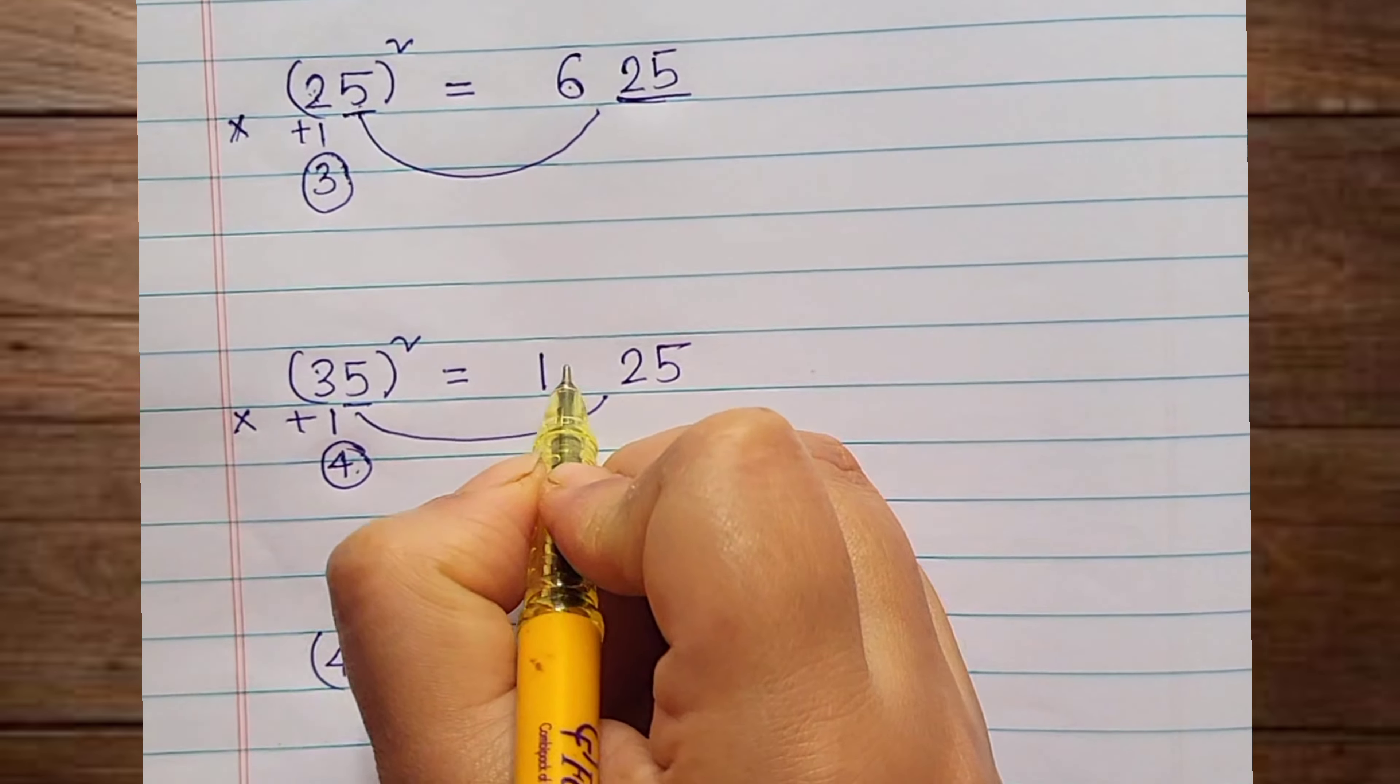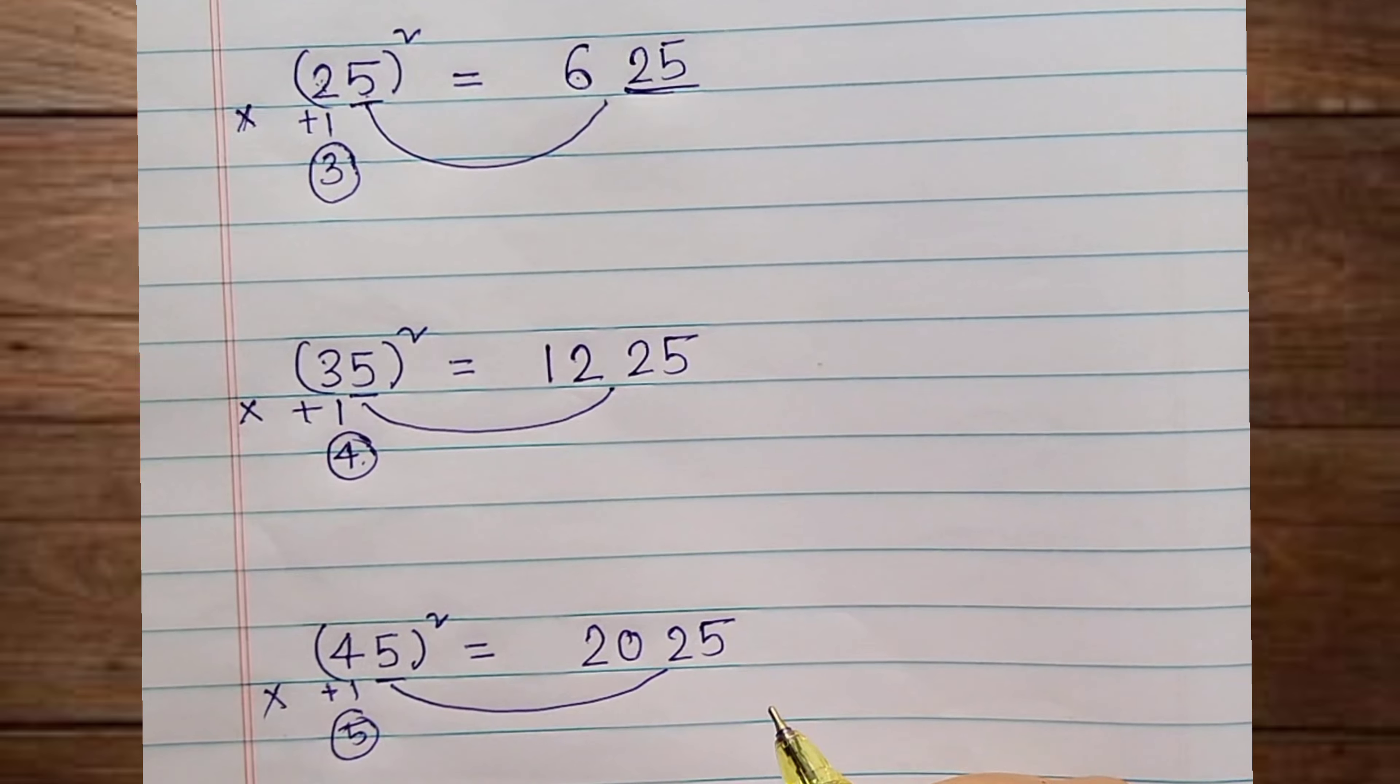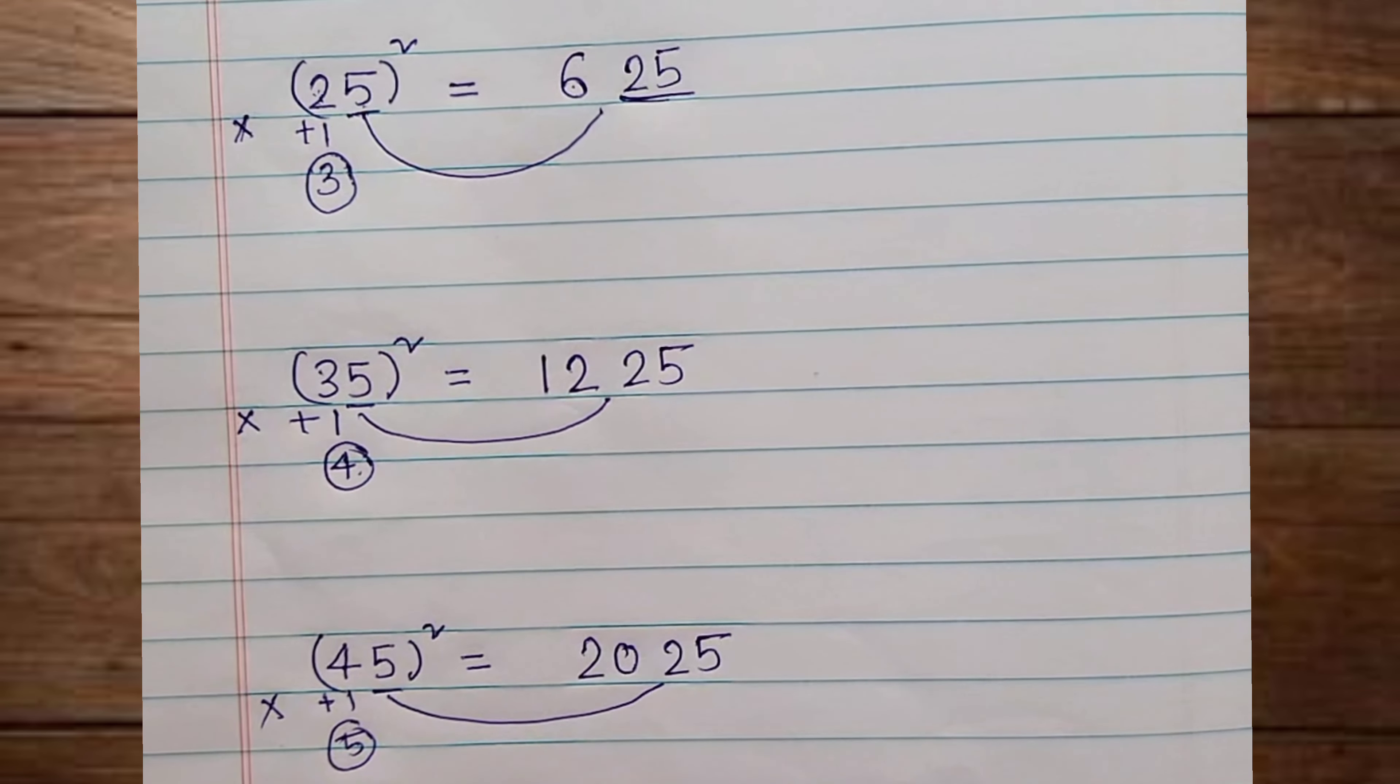5 squared we can write 25, and 4 plus 1 is 5. Again, multiply 4 into 5, it is 20.